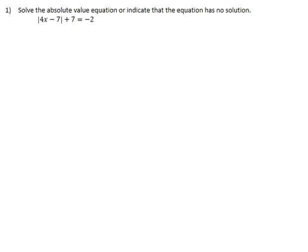We're looking at question number one, which asks us to solve the absolute value equation or indicate that the equation has no solution. We are given the equation |4x - 7| + 7 = -2.